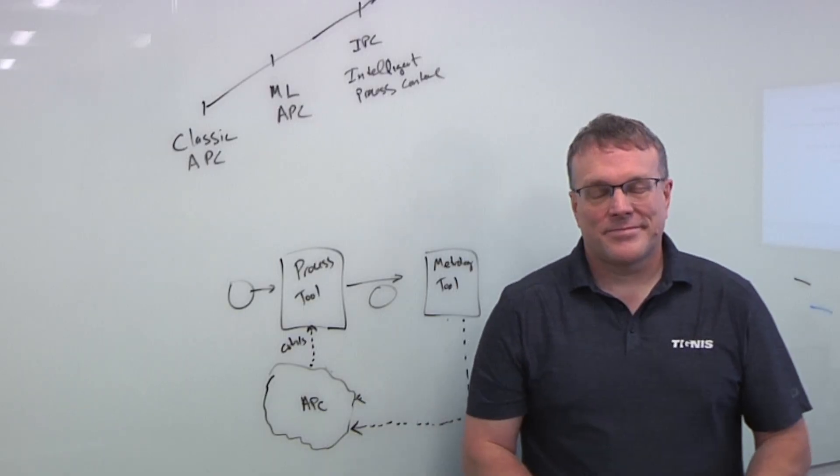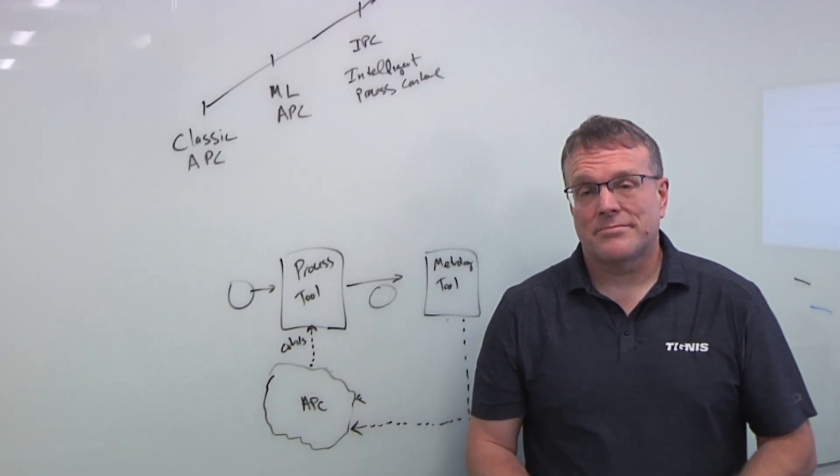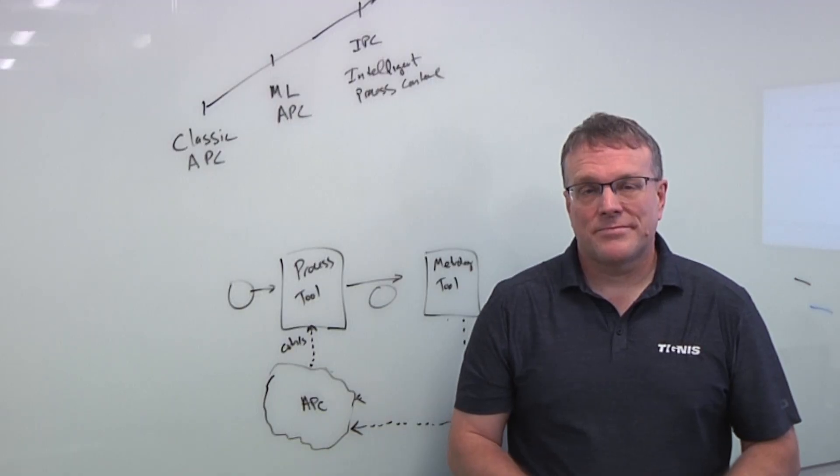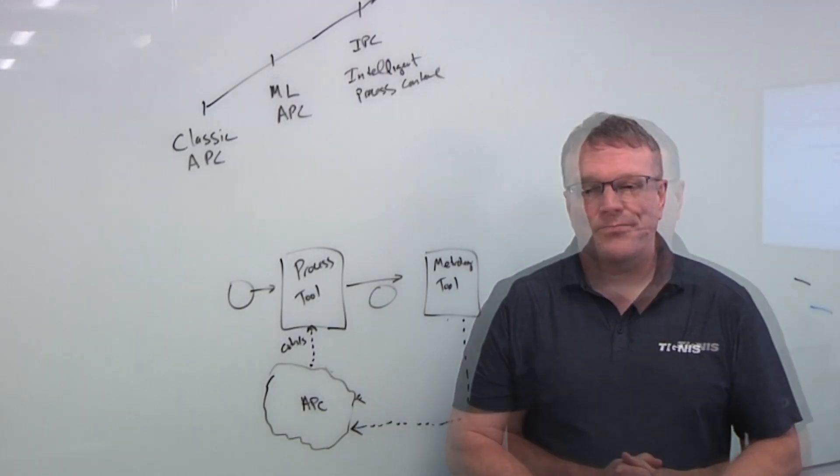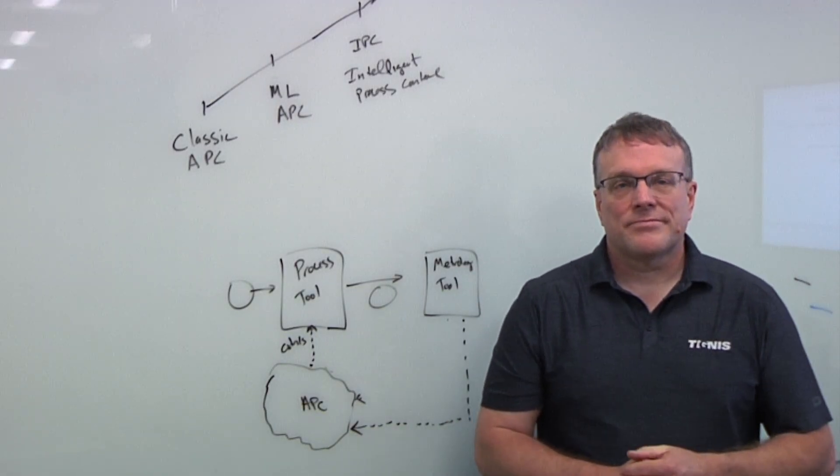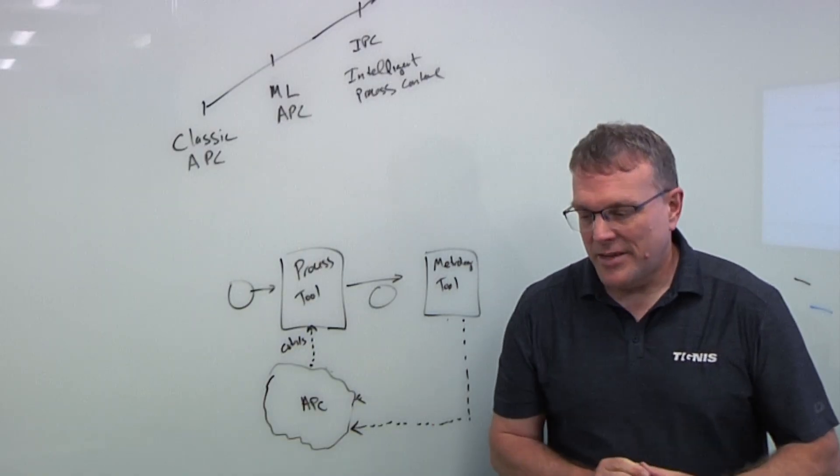Hi, I'm Ed Sperling, Editor-in-Chief of Semiconductor Engineering. I'm here with John Herlocker of Tignus, who's going to talk today about advanced process control. This is part of an ongoing series about AI in semiconductor manufacturing. John, in the last section we looked at virtual metrology and how that can be automated. What comes next? How does this actually come together for the people that are making chips?